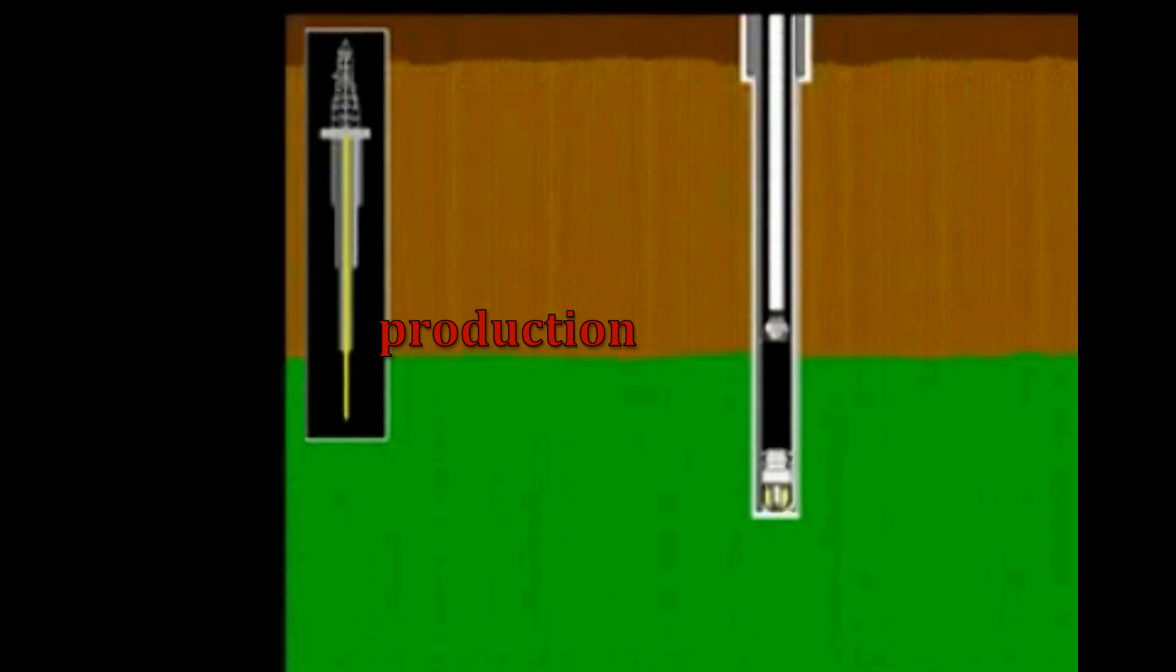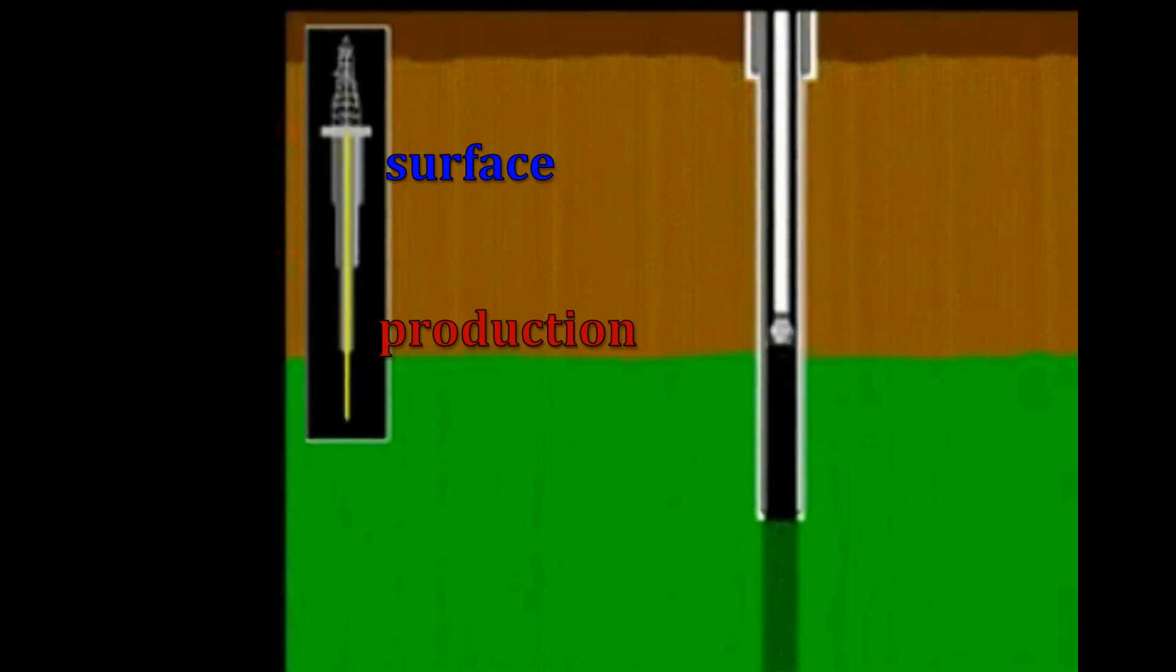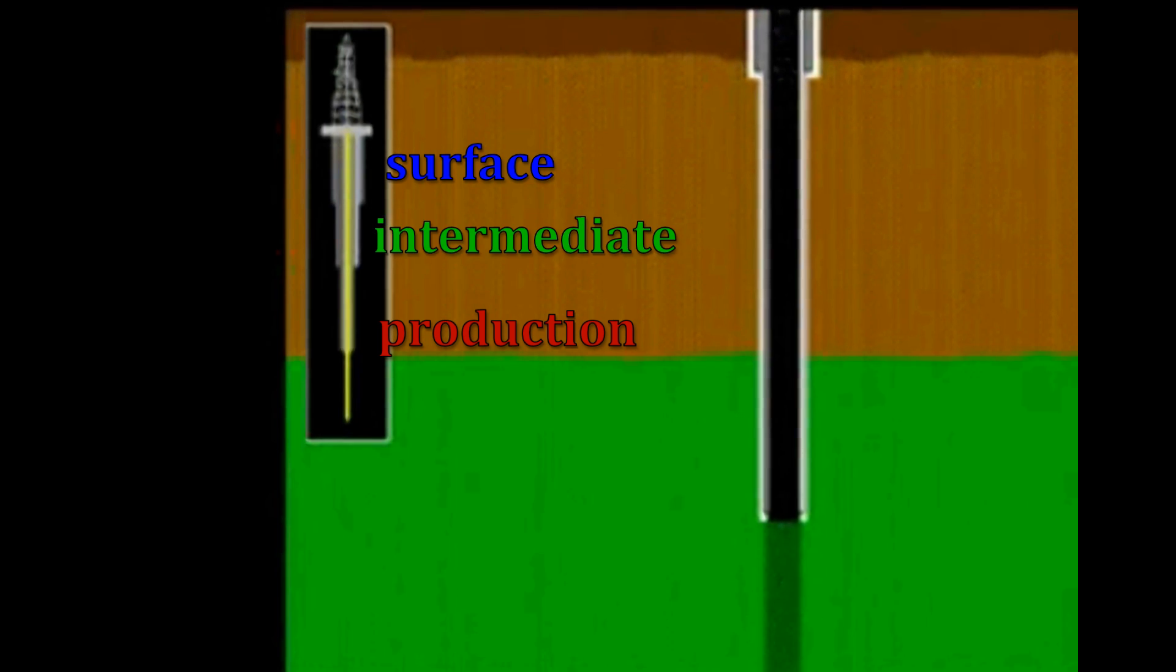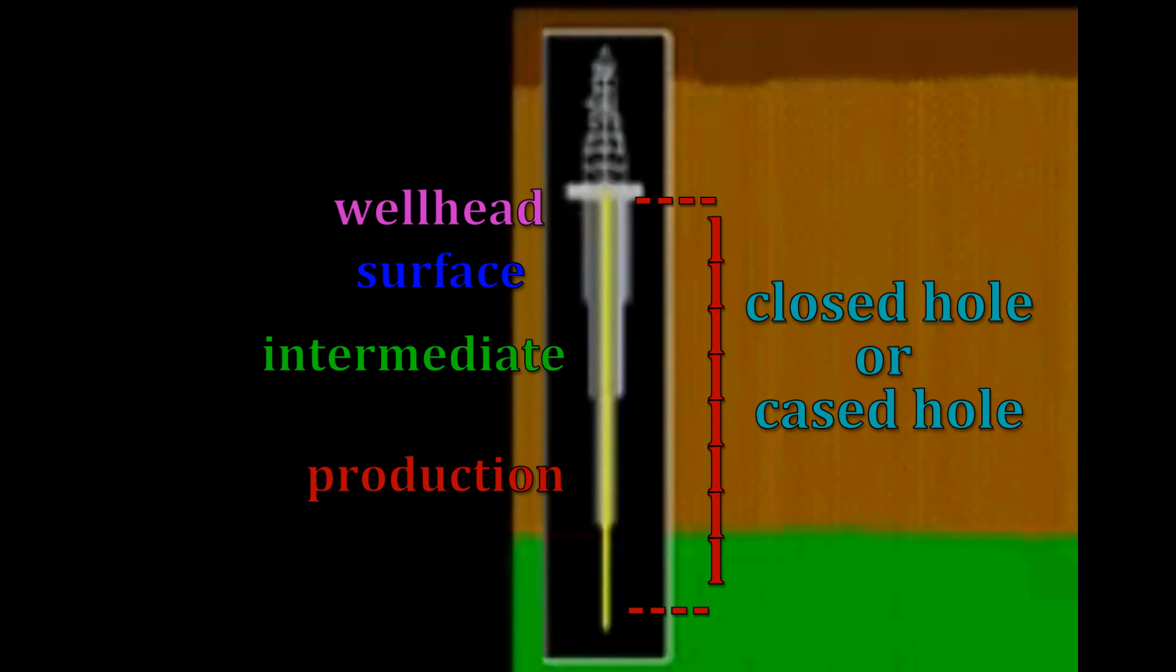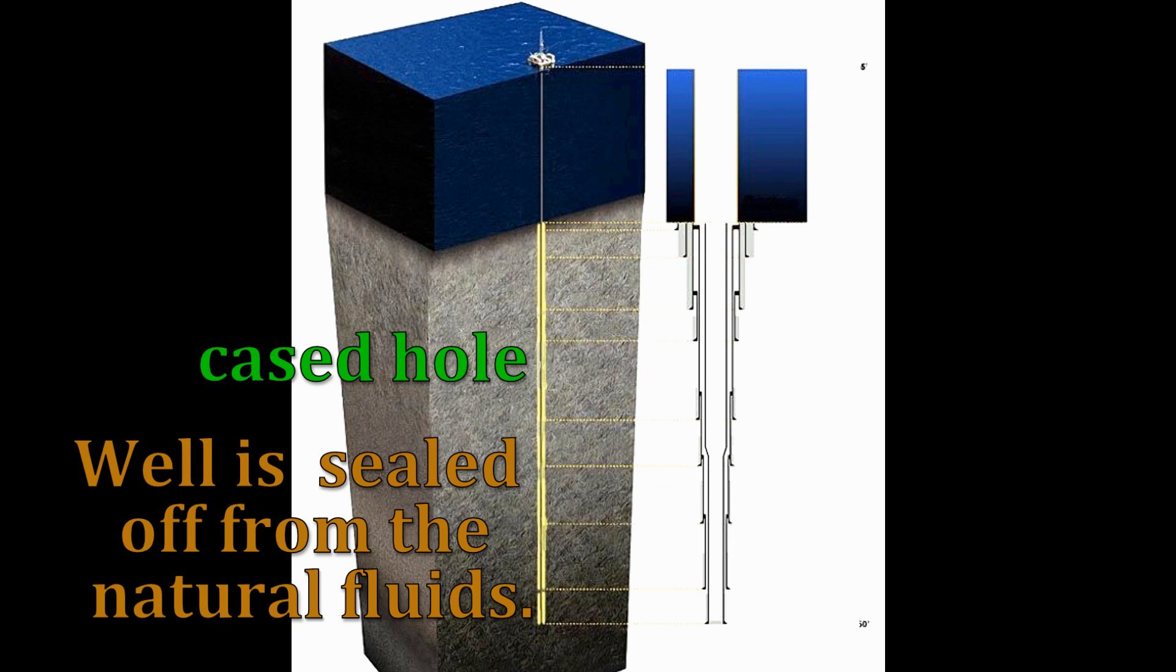Once the production casing is run and cemented and attached to the surface and the intermediate casing string at the well head, these casings form what is known as a closed hole or cased hole. This hole from the top to the bottom is now sealed off from the natural fluids and solids that exist in the subsurface.